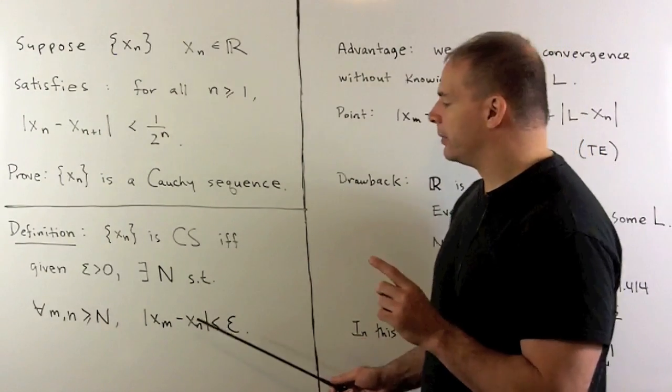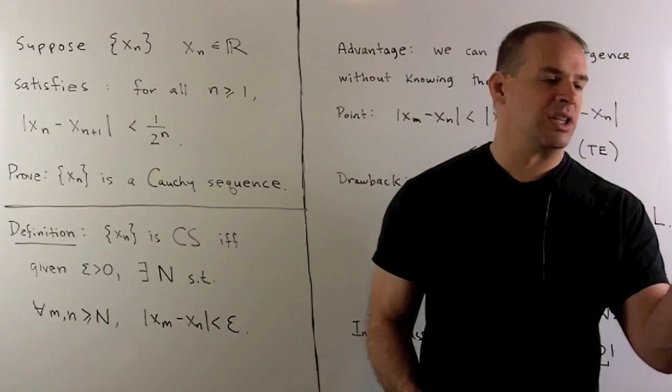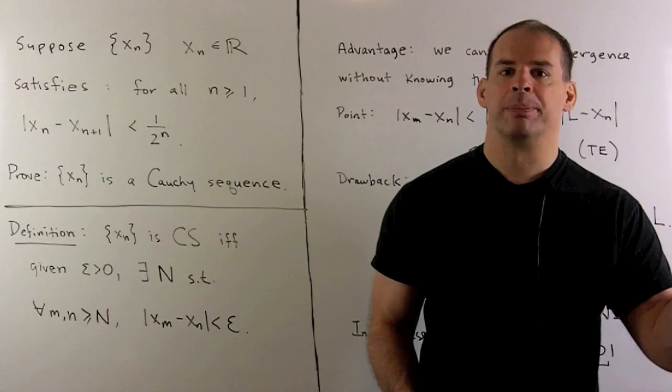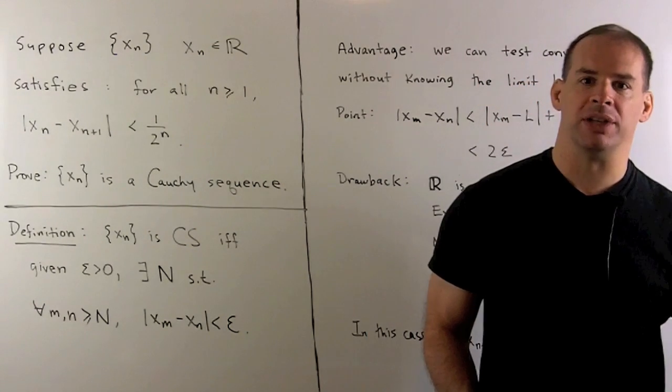What this says is if we go far enough out in the sequence, if I take the distance between any two of those points, it's always going to be less than epsilon. We're controlling how far these points can spread.